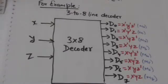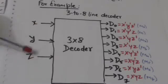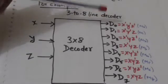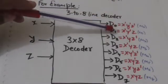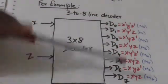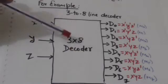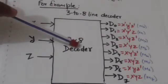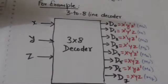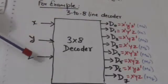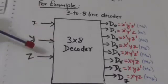The input lines are labeled by symbols x, y, and z, and the output lines are labeled d0, d1, d2, d3, d4, d5, d6, and d7. Each output of this decoder represents a minterm of the input variables x, y, and z.